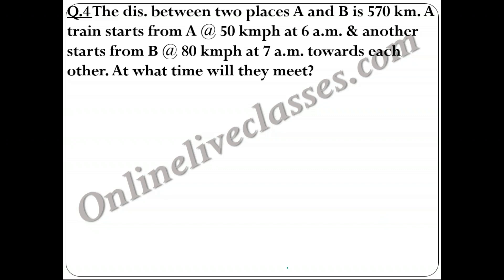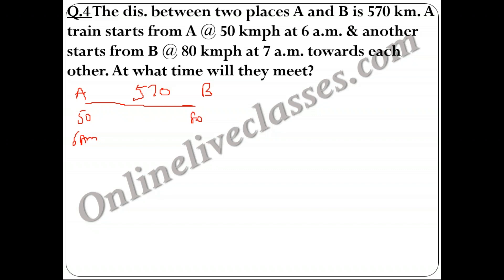Question 4: The distance between two places A and B is 570 km. A train starts from A at 50 km/hr at 6 a.m. Another train starts from B at 80 km/hr at 7 a.m., and both travel towards each other. At what time will they meet? Let the meeting point be M.